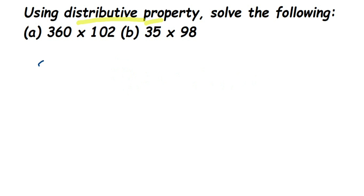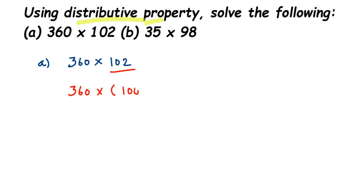The first problem is 360 multiplied by 102. We have to split one number so we get something plus something, or something minus something. Here I'm going to split 102, because it's easier to multiply. So I write 360 multiplied by (100 plus 2). Now we apply distributive property — multiply 360 first with 100, then with 2.